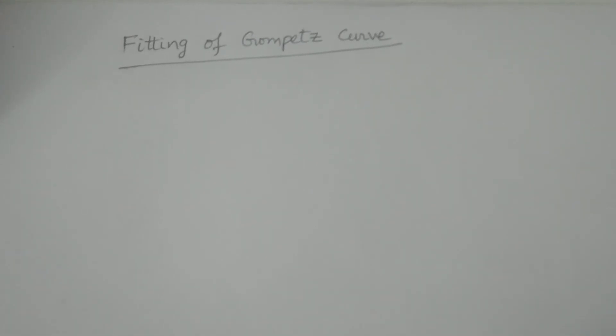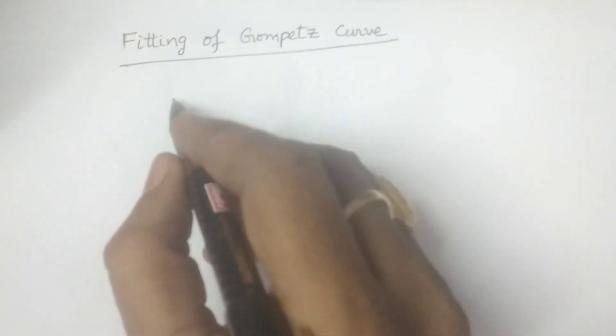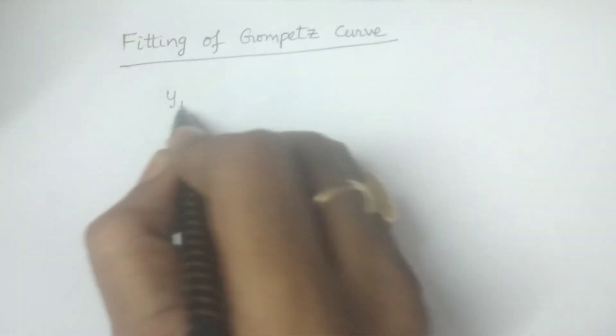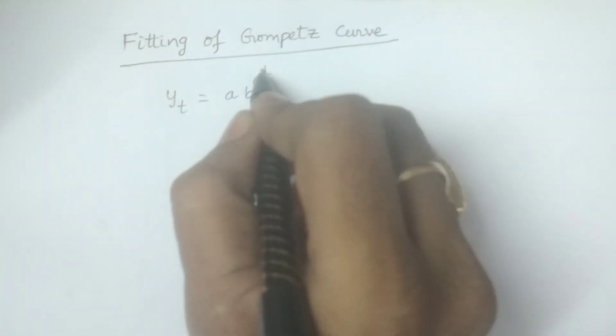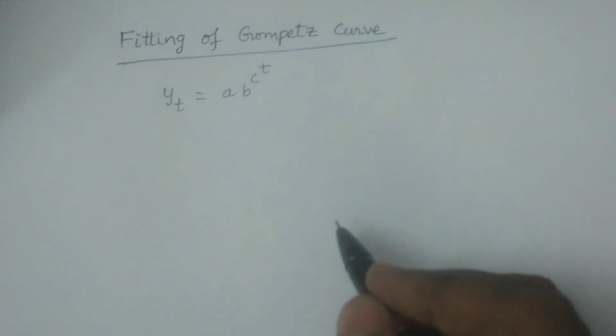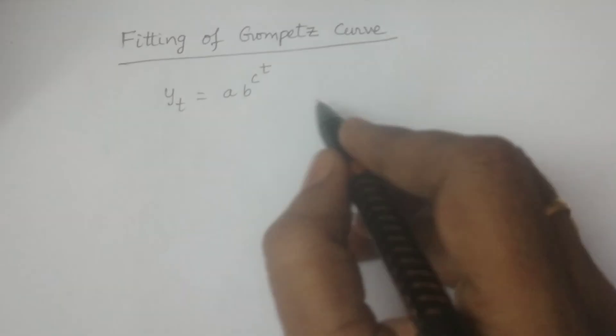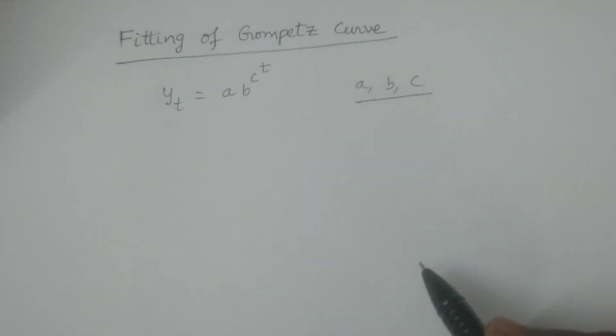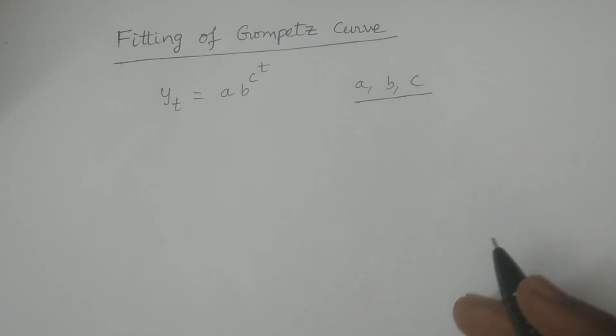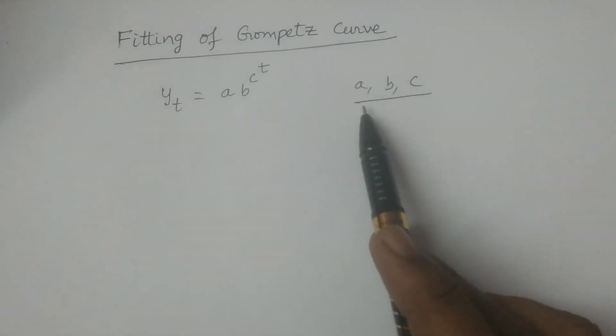What is a Gompertz curve? First of all, the Gompertz curve is y_t equals a into b power c power t. This is called Gompertz curve, in which a, b and c are parameters. We have to find out three parameters so that the Gompertz curve is going to be fitted to the given data. By fitting the given data, you have to calculate three parameters a, b and c. That is our objective.